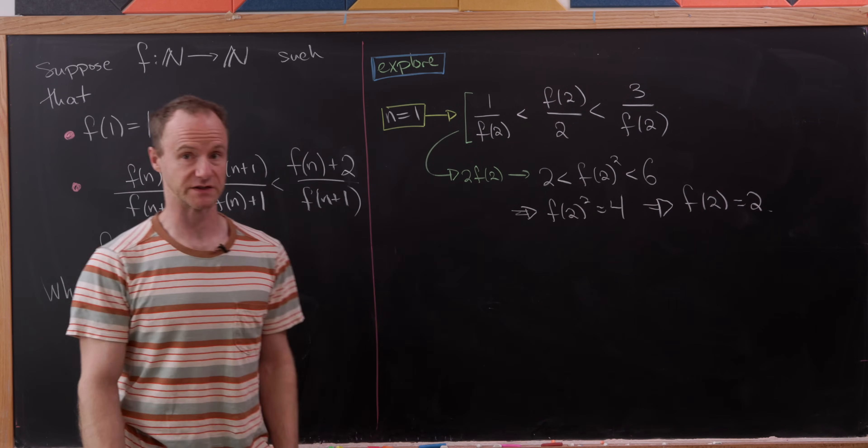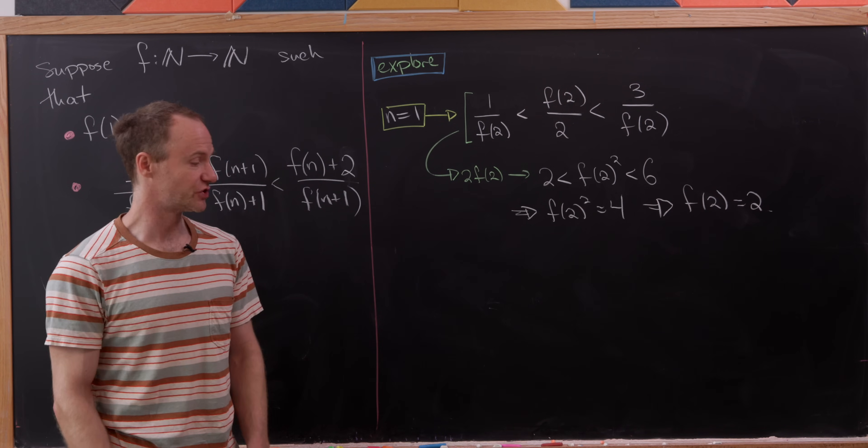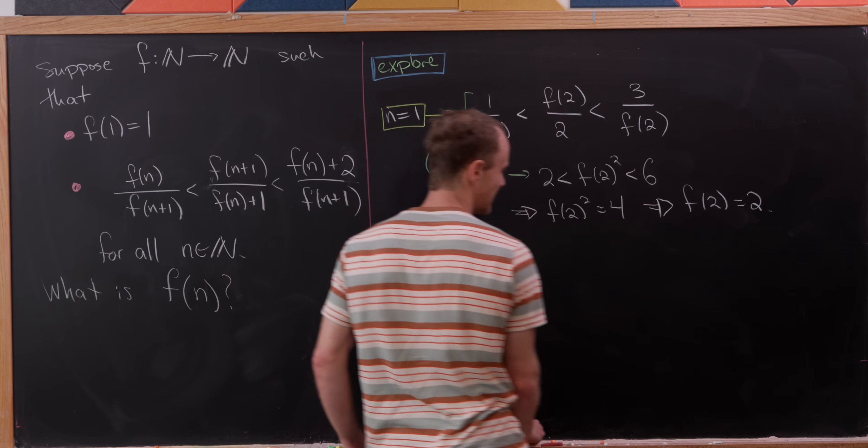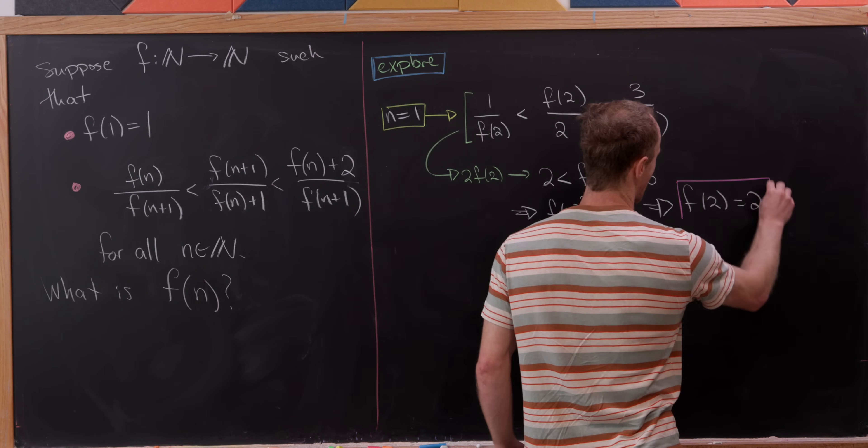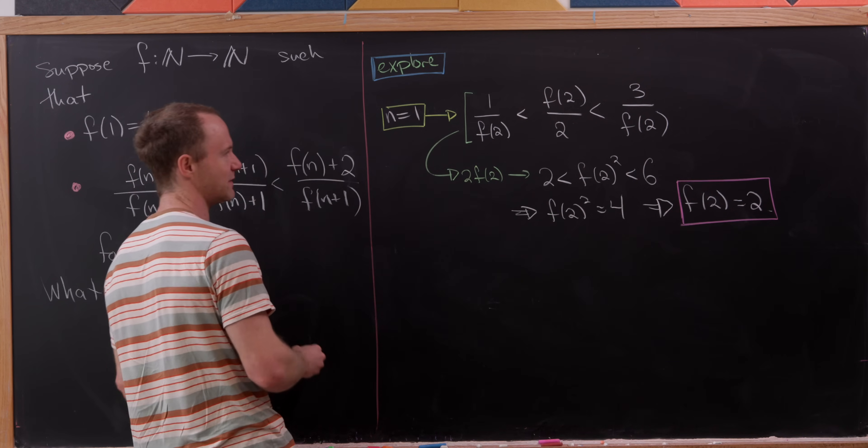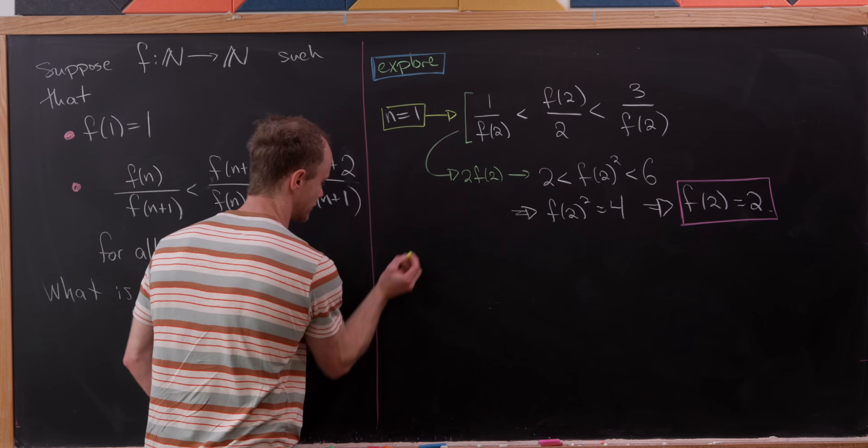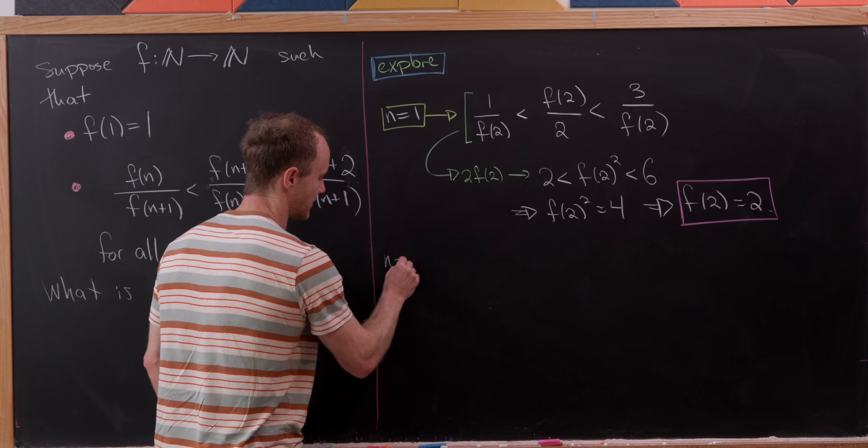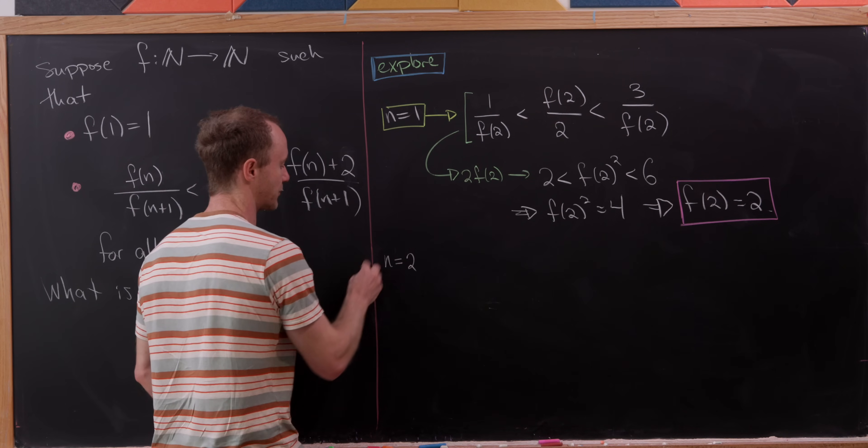So we've got f of one is one, f of two is two, but now let's maybe do one more round of exploration to see if this maybe continues to hold true, and then after that we can maybe make a conjecture and prove it.